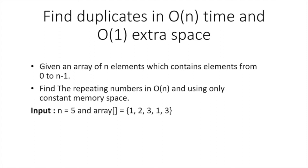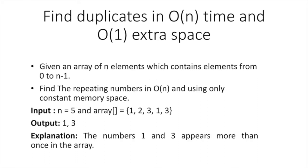For example, if we take the input where n is equal to 5 in an array, you can see 1 and 3 are occurring more than once. 1 occurs 2 times and 3 occurs 2 times, but 2 occurs only 1 time. So 1 and 3 are repeating, and the output of this array would be 1 and 3, as these numbers appear more than once.